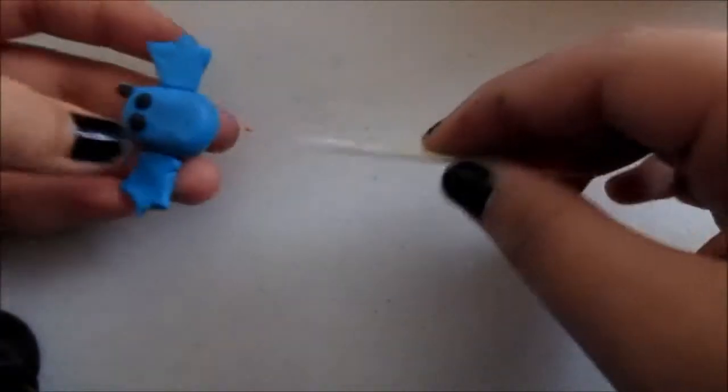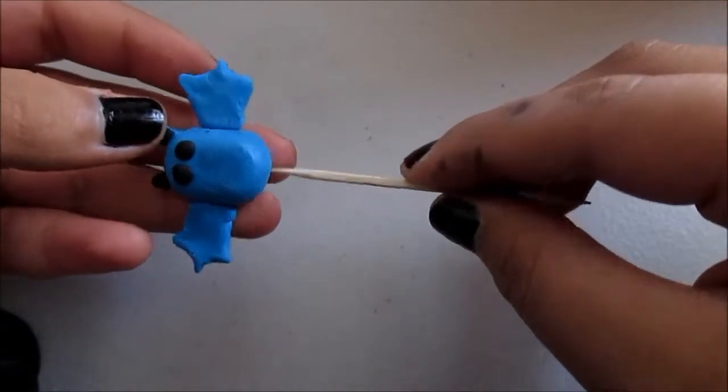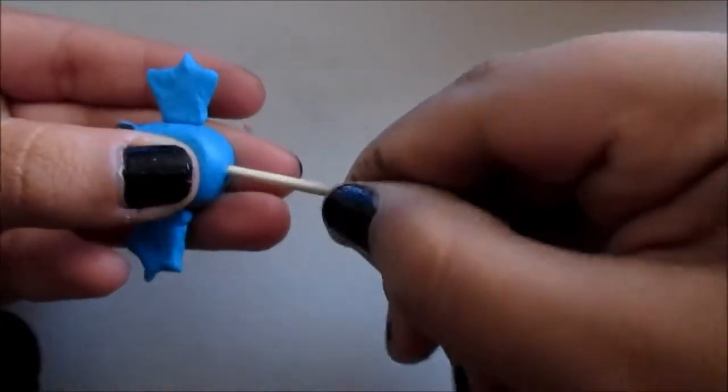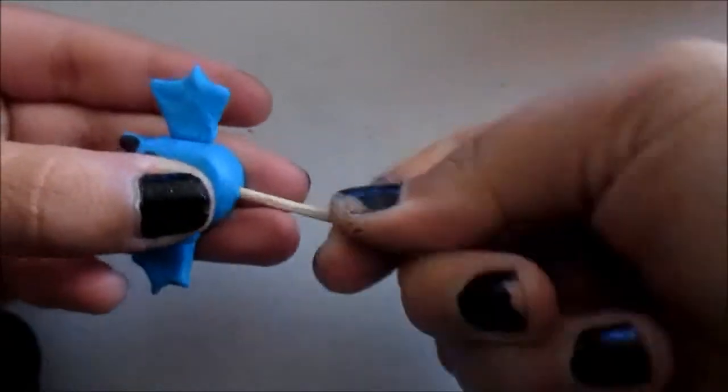Next you need to get a toothpick and put it straight through the middle of the thing that you made, so I am sticking it through my bat. You'll see why we do this in the video.